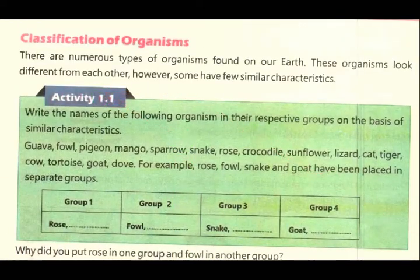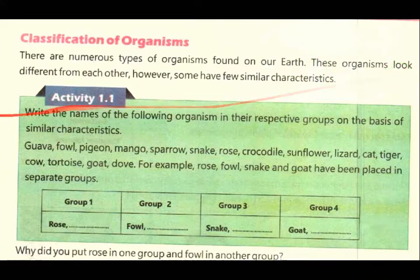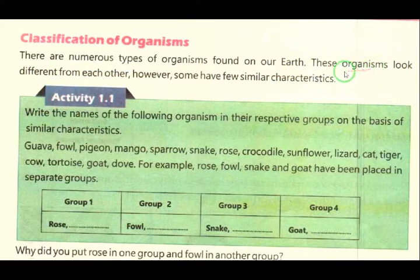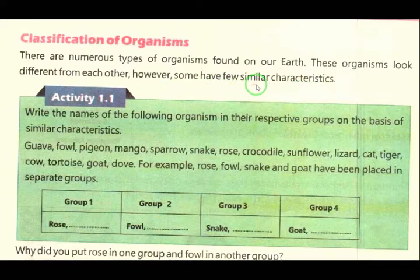There are numerous types of organisms found on our earth. These organisms look different. However, some have a few similar characteristics.